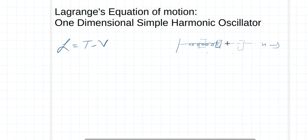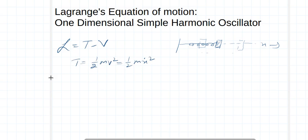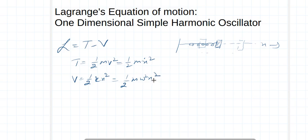When released from this point it goes back and forth, and I am assuming it is an undamped oscillator. For such an oscillator, the kinetic energy is T = ½mẋ², and the potential energy is V = ½kx², which can also be written as ½mω²x². This is the potential energy.